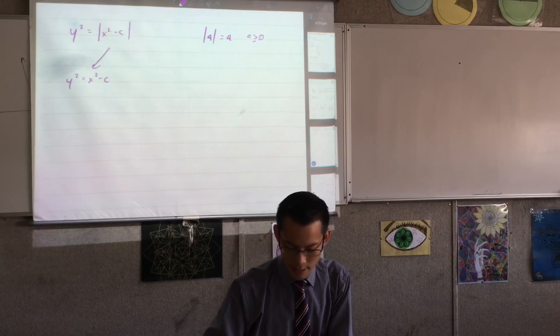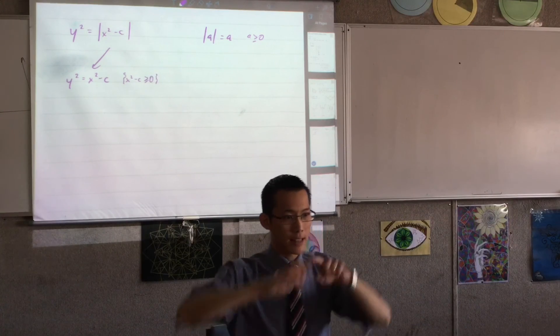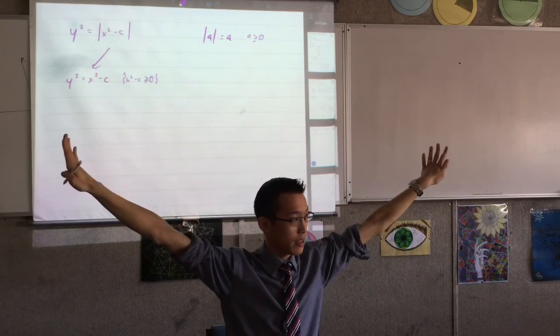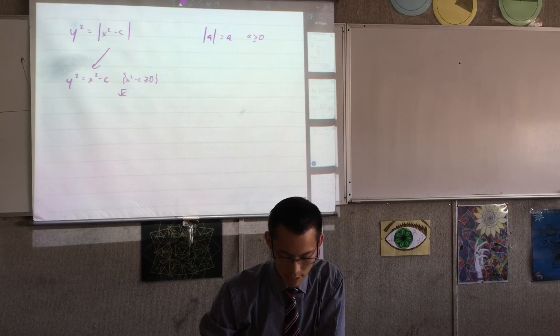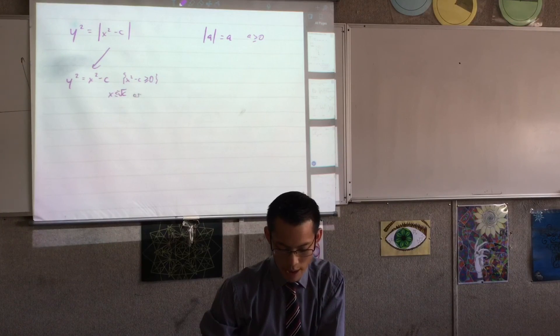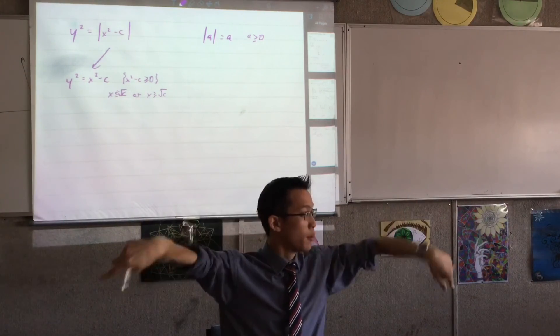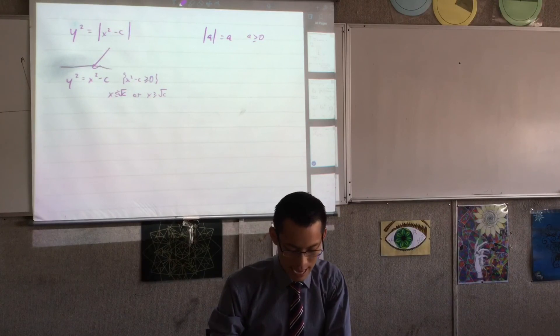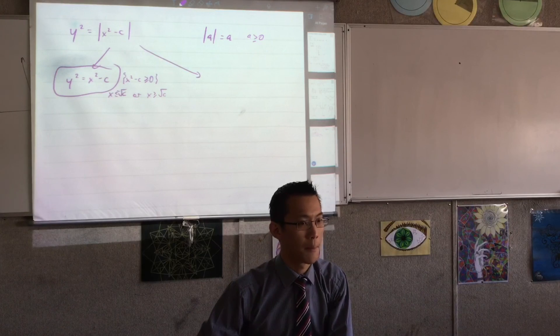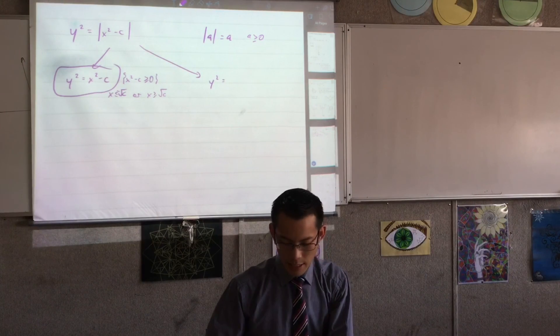So sometimes y squared is x squared minus c. When? When is the absolute value of a equal to a? For what values of a? When a is positive, or equal to zero. You guys know that zero doesn't matter. So for me, what that means is when x squared minus c is positive, that's that same parabola. That means it's on the outsides. So x is less than or equal to the square root of negative c, or x is greater than the square root of c.